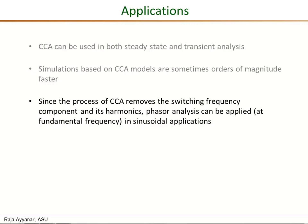So when we use the cycle by cycle averaging, we just saw in an example in this video that it removes the switching frequency and its harmonics, leaving us only the DC component and the fundamental frequency component. So therefore for a fundamental frequency analysis, we can still use phasor analysis if we deal with only CCA quantities. That's a very significant advantage.